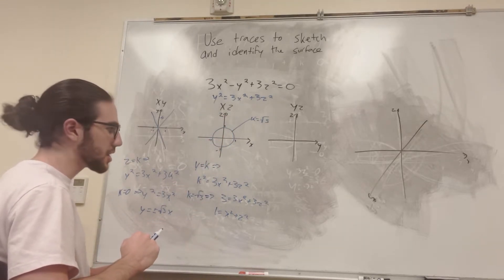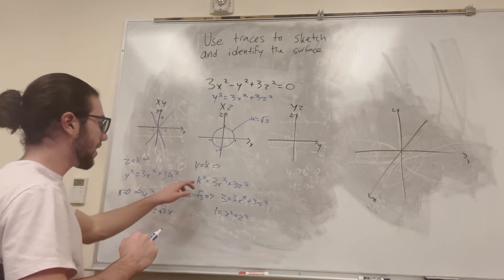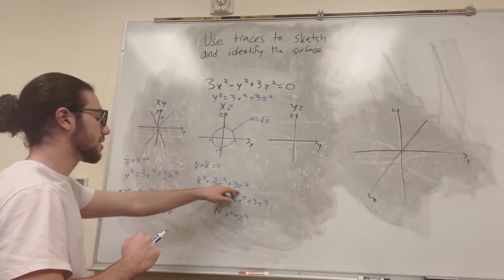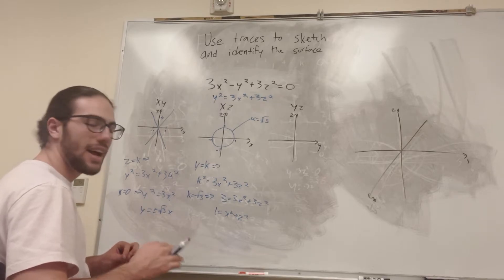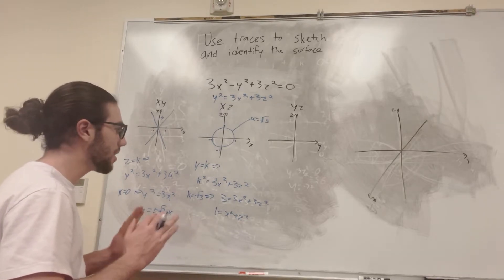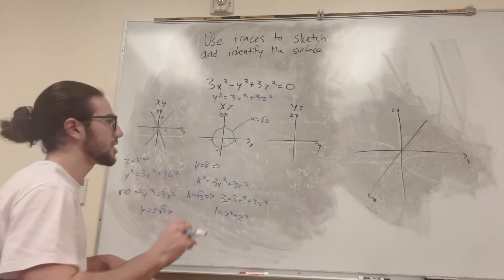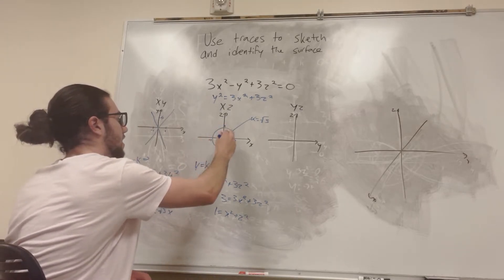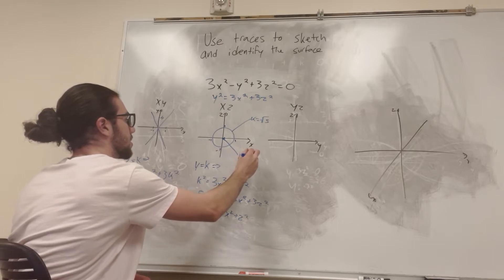How about this? What if we say k is equal to 0? So then we have 0 is equal to 3x squared plus 3z squared. Is that ever going to give you a function that works? It's never going to give you anything. The only way that that works is where x and z is equal to 0. So the little dot right here, this is where k is equal to 0.